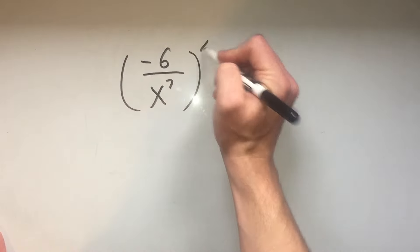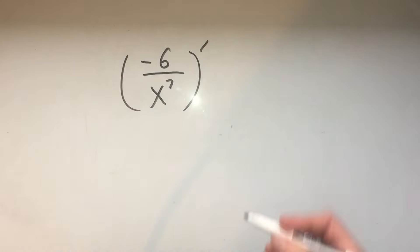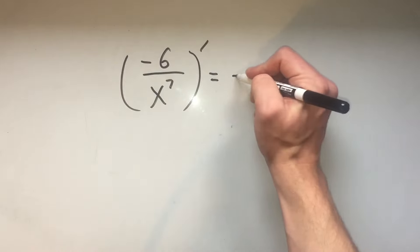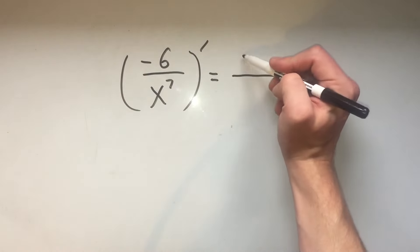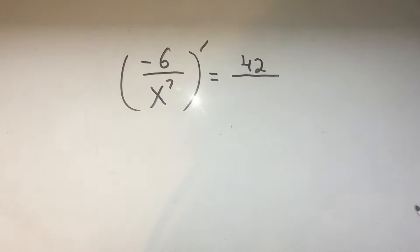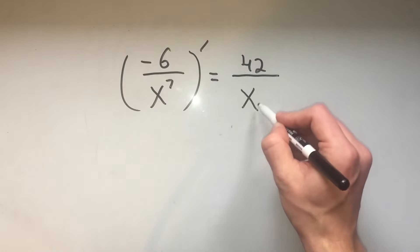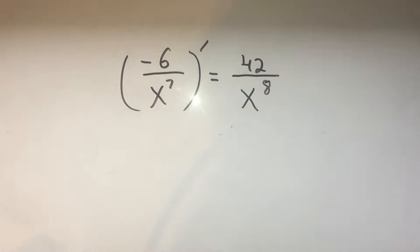Let's say I wanted to take the derivative of this thing. Well, I'll use my new shortcut rule, which is I switch the sign. So this negative will become a positive. I multiply by the power in the bottom. Six times seven is 42. And then I add one to the power in the bottom. And that's the derivative of that function.